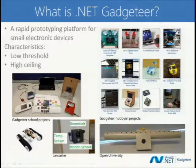So, a rapid prototyping platform for small electronic devices. But there are two important characteristics that make it quite suitable for outreach. One is a low threshold and the other is a high ceiling. Low threshold means you can do quite sophisticated projects quite easily. For example, a digital camera with SD card storage takes less than half an hour to build, even for a beginner. You really need no background at all.